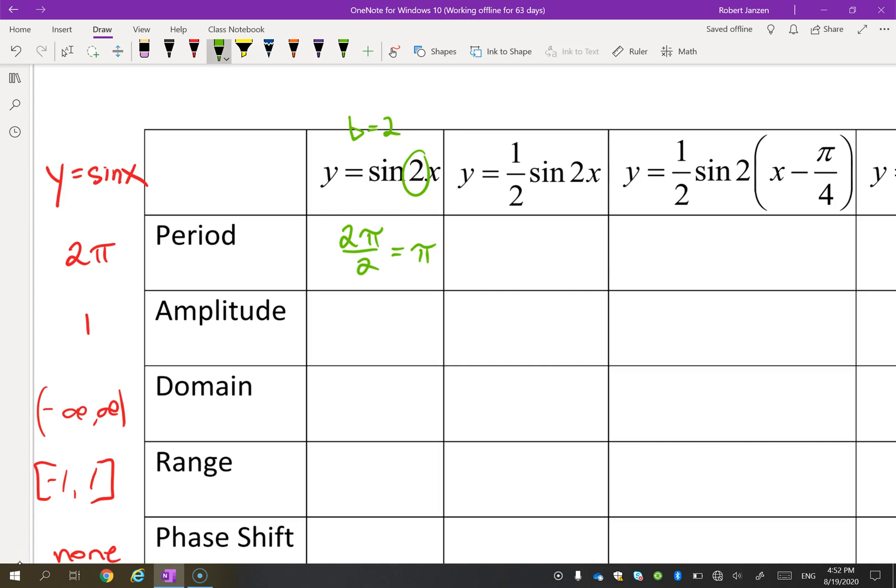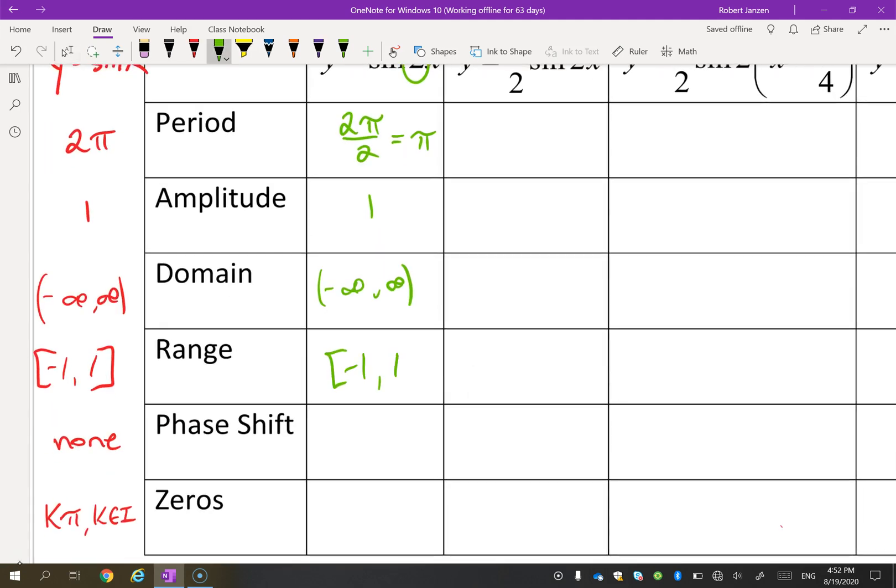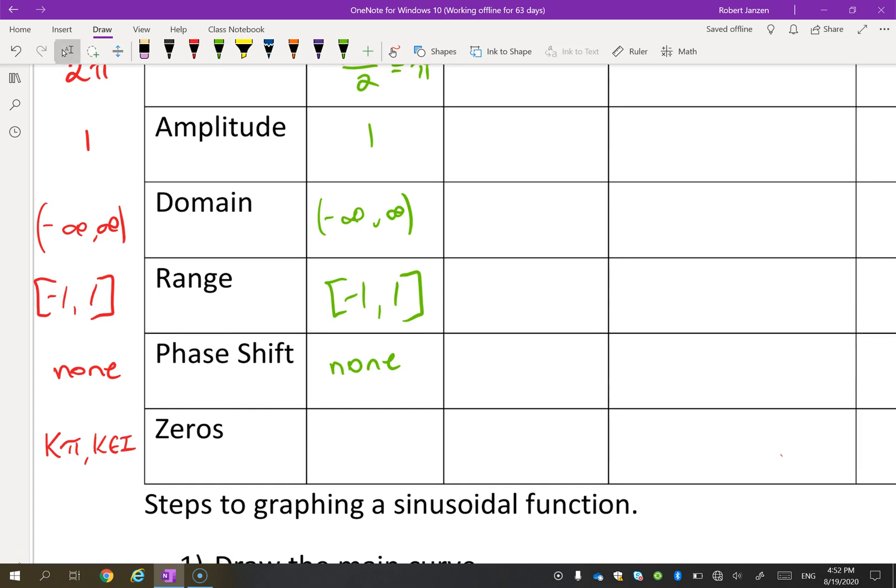It is now condensed horizontally. The amplitude won't change. The domain won't change. It's still going to go forever. The range won't change. The phase shift, it hasn't moved left or right. There's still no phase shift. But the zeros are going to happen more often now. In fact, instead of every π, they're every half π. So we're going to say kπ/2. Now really, you don't need to say we're starting at π/2 because it doesn't really matter where you start. What we're saying is every half of a π. Here's every π. Now we're dividing it in 2.